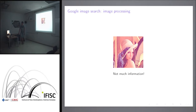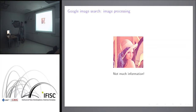I like to look for things in Google Images, because sometimes it's much faster to find something there. If you search for image processing, one of the first images you get is this one, known as Lena. It's a test image that has been used for about 40 years and is still being used. But it doesn't give us much information just by looking at it.